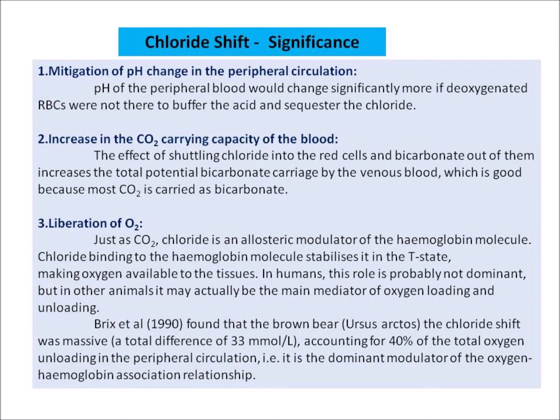Significance of chloride shift: First, mitigation of pH change in the peripheral circulation — the pH of the peripheral blood would change significantly more if deoxygenated RBCs were not there to buffer the acid and sequester the chloride. Second, increase in the carbon dioxide carrying capacity of the blood — shuttling chloride into the RBC and bicarbonate out of them increases the total potential bicarbonate carriage by venous blood, which is important because most carbon dioxide is carried as bicarbonate.